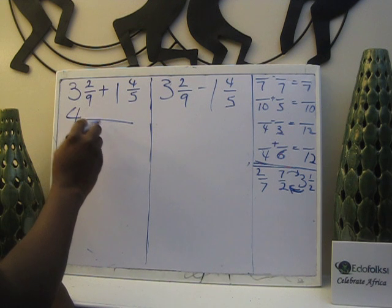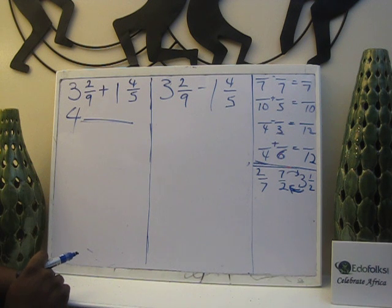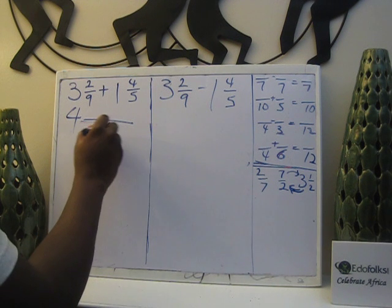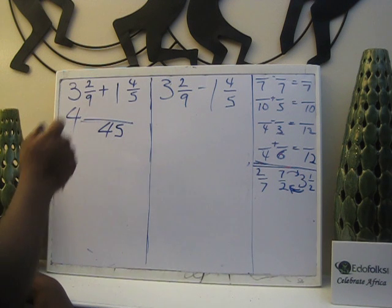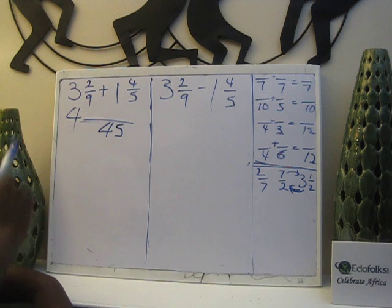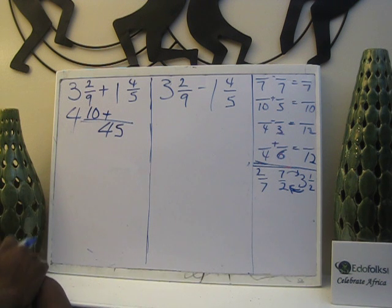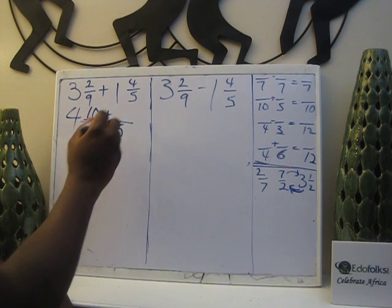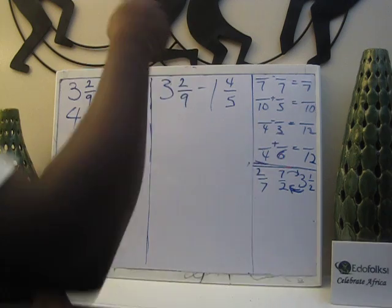Now the lowest common denominator of nine and five, five is a prime number. It can only be divisible by five and one. No relationship with nine whatsoever. So I have to multiply. Nine times five is forty-five. What do I do next? I have to find the numerator for this side and the numerator for this other side. So forty-five divided by nine gives you five. Five times two is ten. Plus, forty-five divided by five is nine. Nine times four is thirty-six. So you divide by the denominator and the answer is multiplied by the numerator.